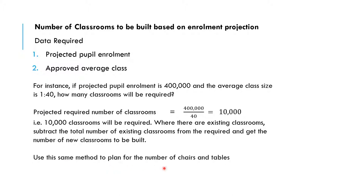Use the same method to plan for the number of chairs and tables. If you know a class has 40 pupils, you calculate how many chairs are required based on the total enrollment. You also need to consider seating arrangements — whether students will sit one to a chair or two to a chair — as that will equally determine the total number of chairs required.